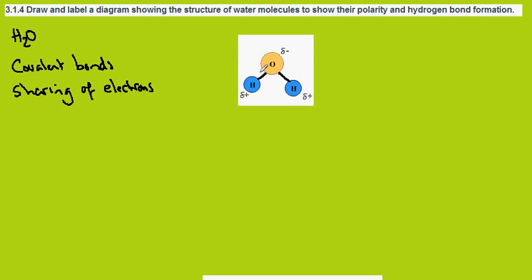So in between here we've got one electron from the hydrogen, one from the oxygen, one from the hydrogen, one from the oxygen. Two electrons per bond.